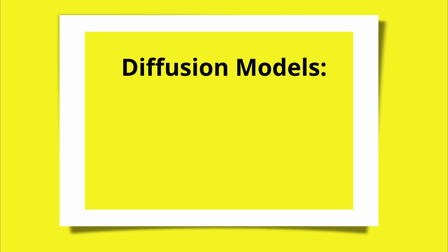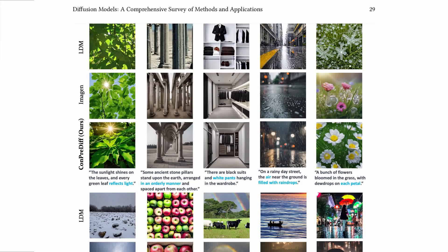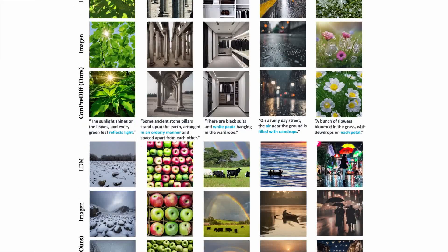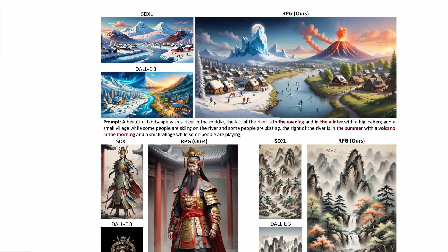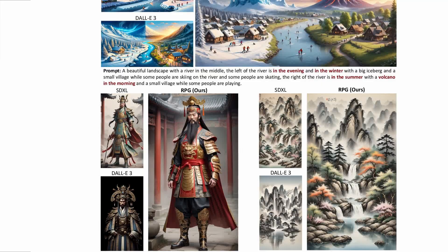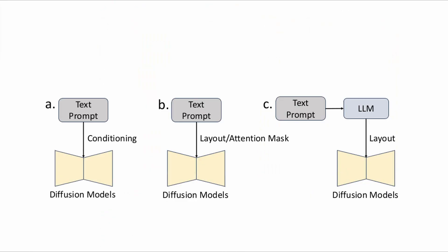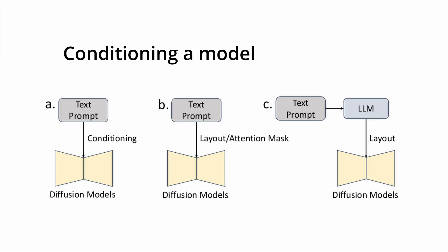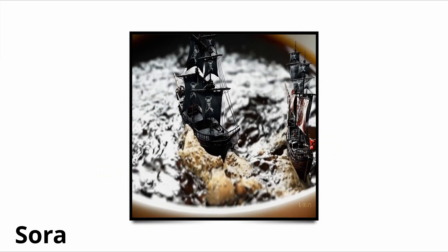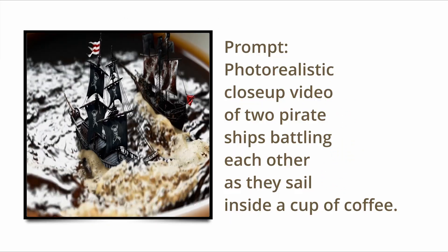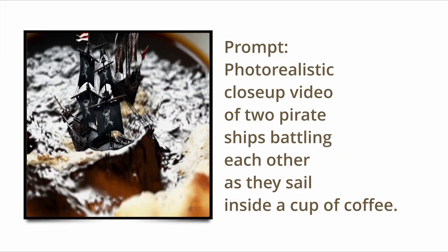The first concept brings us to the distinction between unconditional and conditional diffusion models. Unconditional generation is often used to explore the upper limit of the performance of the generative model, while conditional generation enables us to control the generation results according to our objective — for example, based on the intended content or application. Conditions can range from labels, classifiers and text to image and semantic maps. In the case of Sora, this conditioning information can be a user's text prompt.